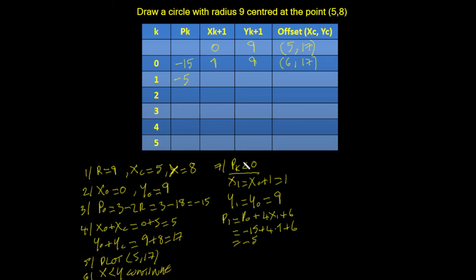If pk is not less than 0 — if it is greater than or equal to 0 — then x1 = x0 + 1, y1 = y0 − 1, and the decision value becomes p1 = p0 + 4×(x1 − y1) + 10. That is a different decision formula for the p values. Work through it yourself on the next page.